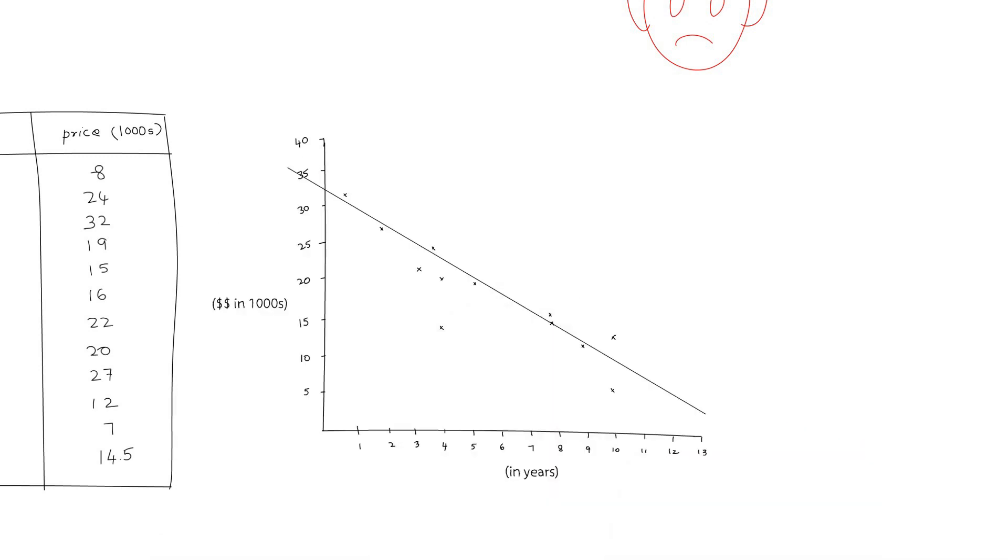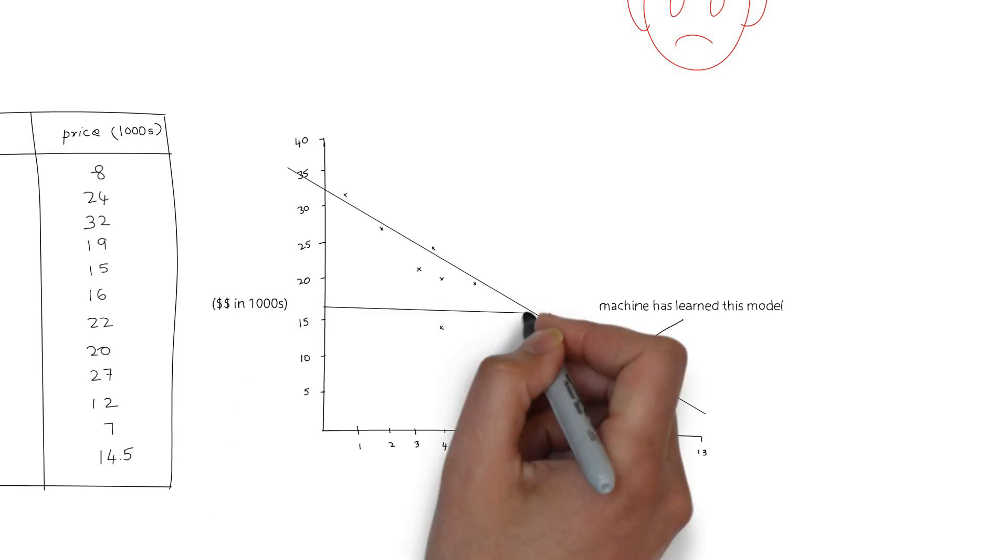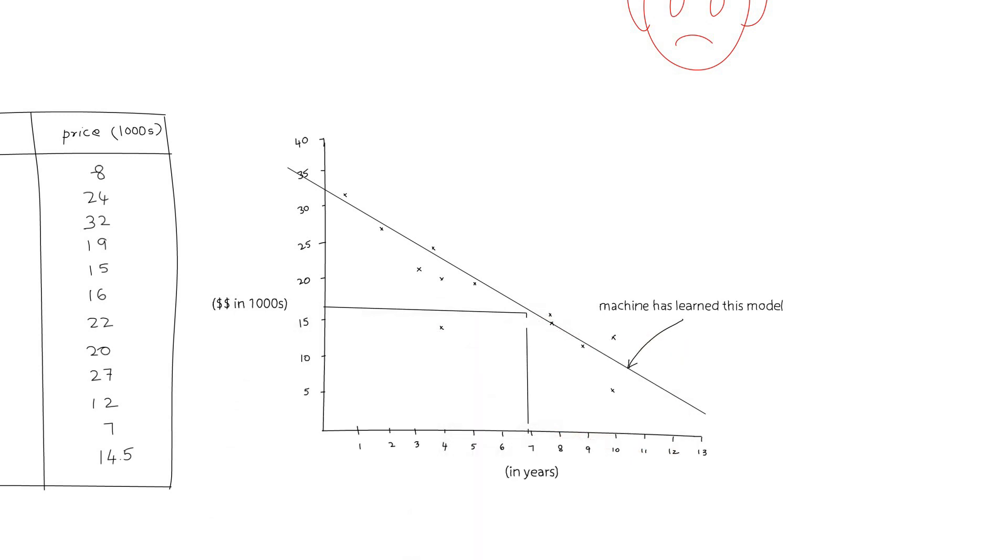As you can see, there is somewhat of a pattern. I can draw a line like this to approximate how much I should pay for, say, a 7-year-old car, which turns out to be about $17,000.